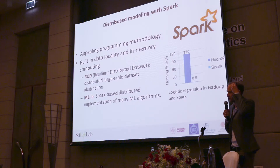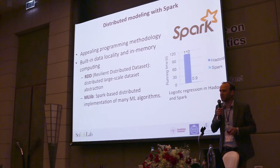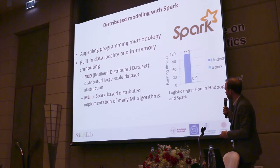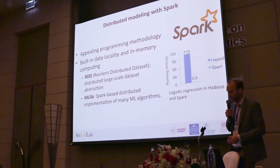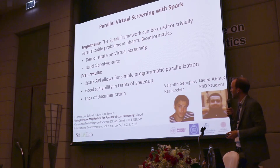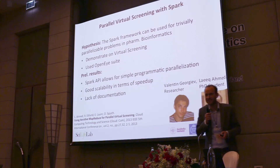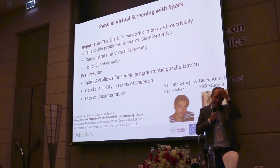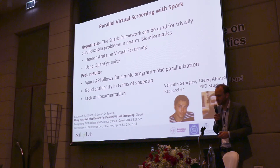We're now moving into Spark — considered next-generation Hadoop. It adds caching, and when you work with distributed datasets in Spark you don't see the distribution. If you participated in the tutorial by Marco Capuccino and me yesterday you got to try this. Spark has an extensive library for machine learning and really excels at iterative tasks like logistic regression. We're now demonstrating and evaluating how Spark can be used for virtual screening — preliminary results show good scalability, but the lack of documentation for these new technologies is a real bottleneck and setting up these systems is not trivial.